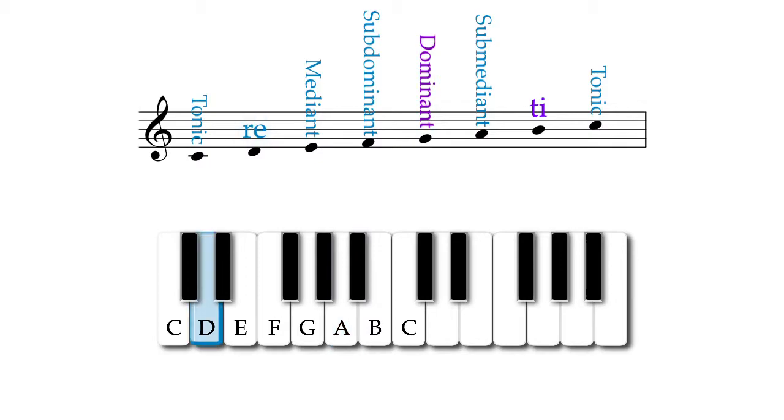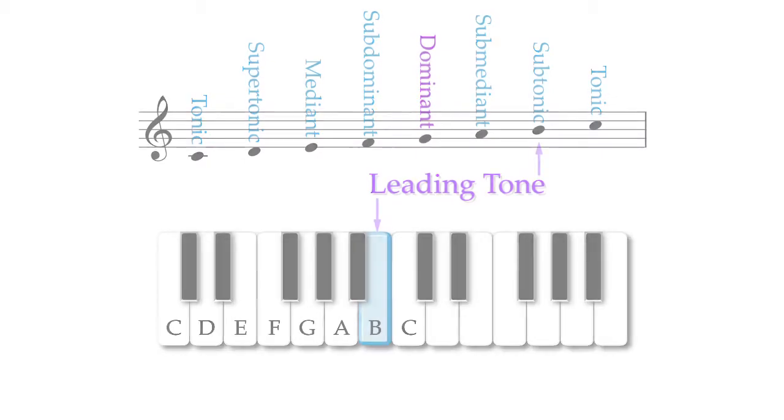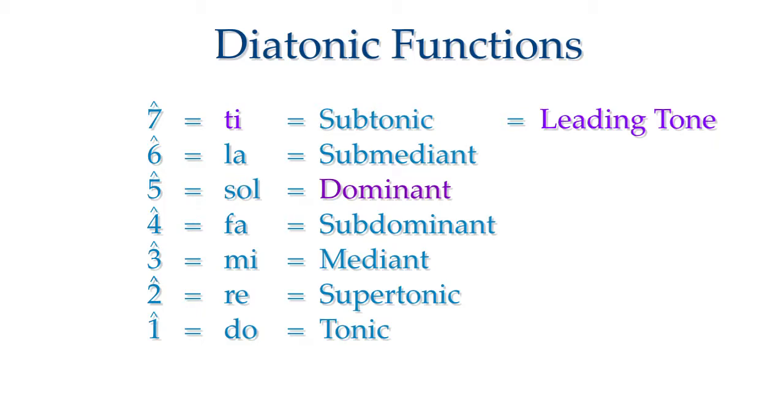The note above the tonic, Re, is called the supertonic, the prefix super meaning above. The note below Do, the seventh scale degree, is the subtonic, though I only use this term in a minor key. In a major key, I use the term leading tone. These names are the diatonic functions of each scale degree.